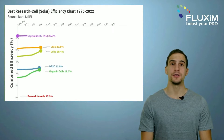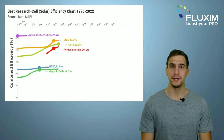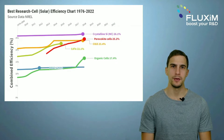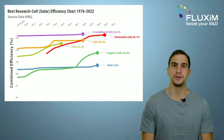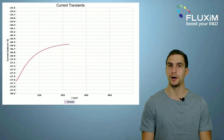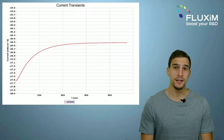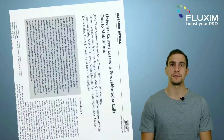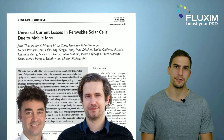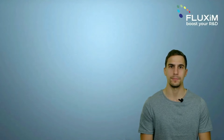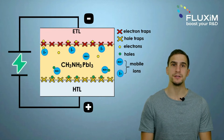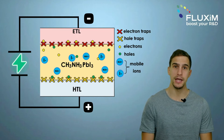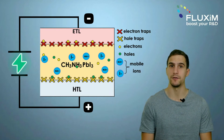Perovskite solar cells keep improving, with researchers developing higher efficiency cells at an impressive rate, but the performance could be higher. The mobile ions present in the perovskite film cause charge collection losses, which limit the maximum achievable current. This finding comes from a recent discovery from the groups of Martin Stolterfoht and Henry Snaith. Perovskites have anions which are mobile, and when the voltage varies, the anions redistribute and negatively affect the built-in potential of the solar cell device.